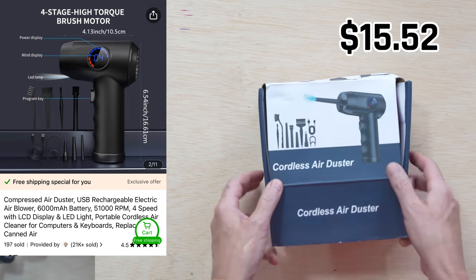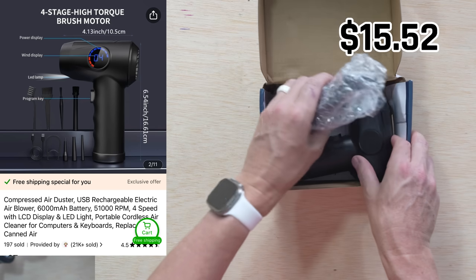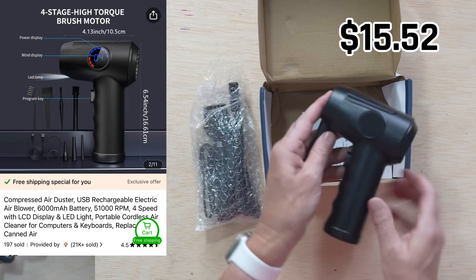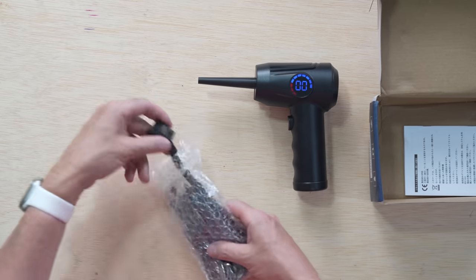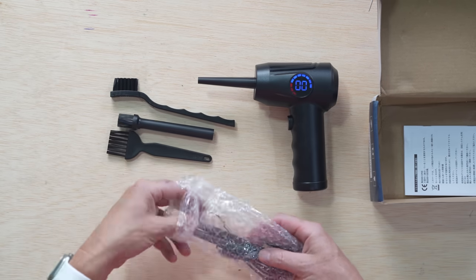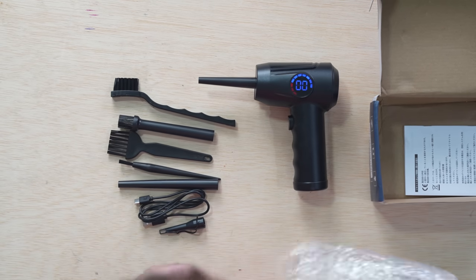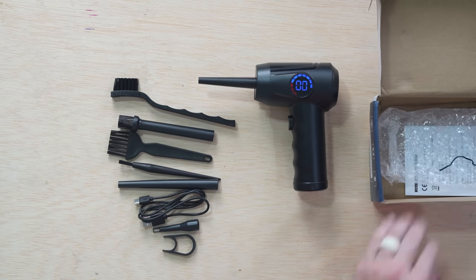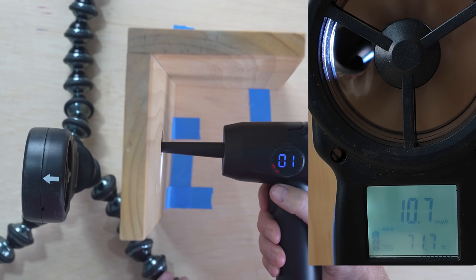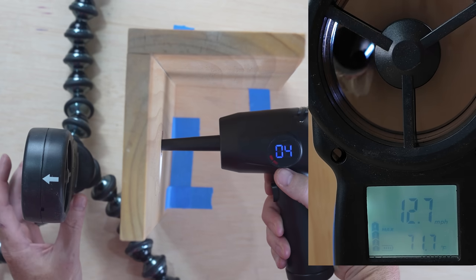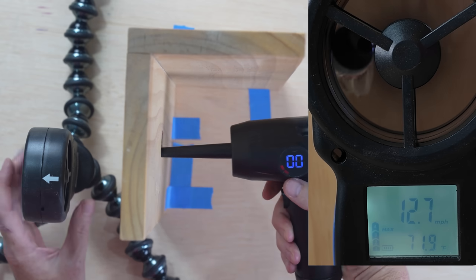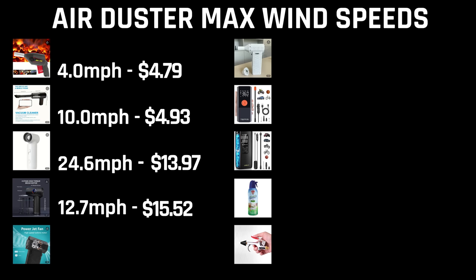Next up coming in at fifteen dollars and fifty two cents is the compressed air duster. I'm loving these creative names here by the way. This one has a pretty large barrel on top with a ton of accessories that you can use like brushes and compressors and you name it. Now on this one you have to click through to the fourth speed, twelve point seven. Okay not bad for the little thirteen dollar ninety seven cent blower.